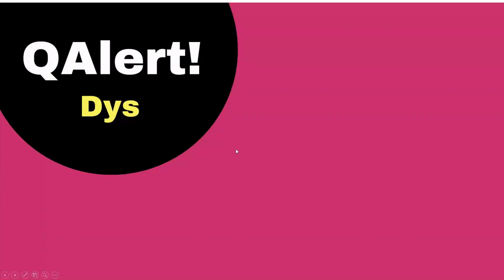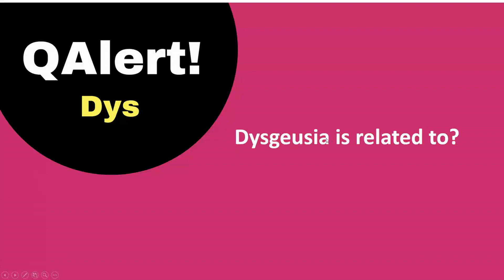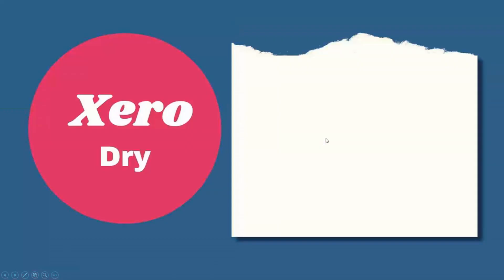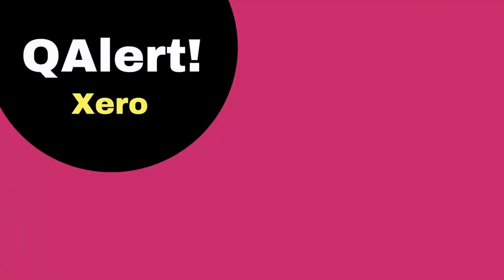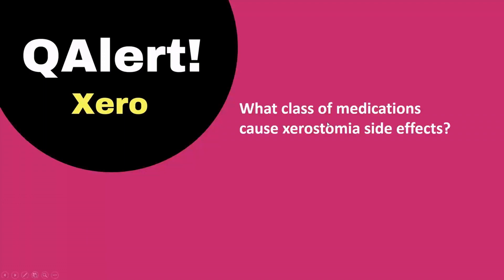Question alert for the dys prefix: dysgeusia is related to taste. Next, prefix xero means dry. Examples: xerophthalmia is dry eye, xerostomia is dry mouth, xeroderma is dry skin, xerochilia is dry lips. Question alert for xero: anticholinergics or muscarinic blockers cause xerostomia (dry mouth) and dry eye side effects.